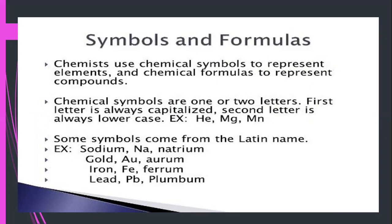A chemical symbol is a notation of one or two letters representing a chemical element. The exceptions to the one or two letter symbols are the temporary element symbols assigned to designate new or to-be-synthesized elements. Chemists use chemical symbols to represent elements and chemical formulas to represent compounds. Chemical symbols mostly use one or two letters — the first letter is always capitalized and the second letter is always a lowercase letter.